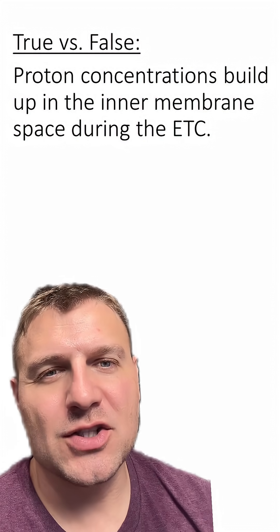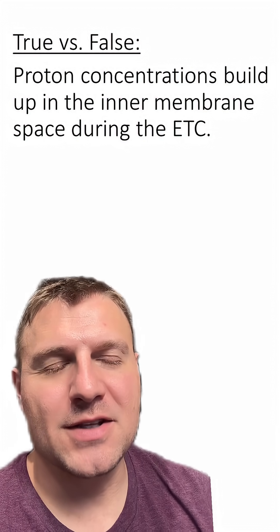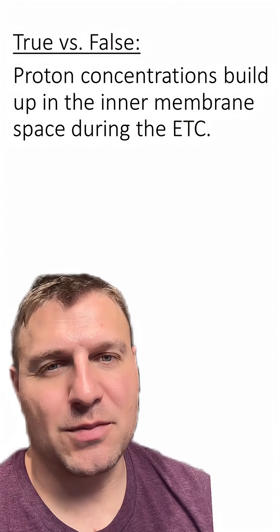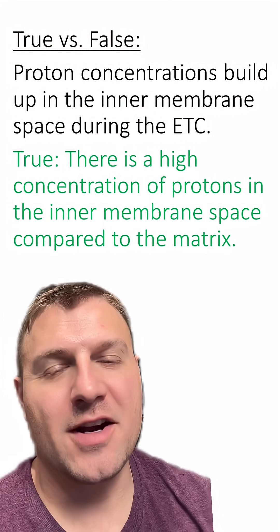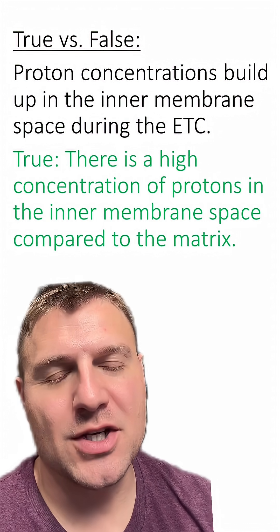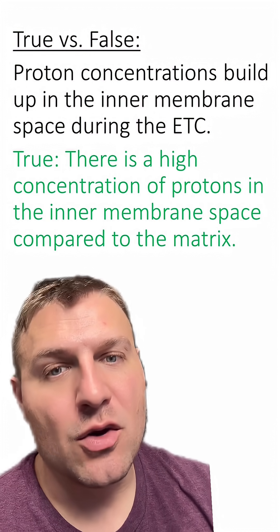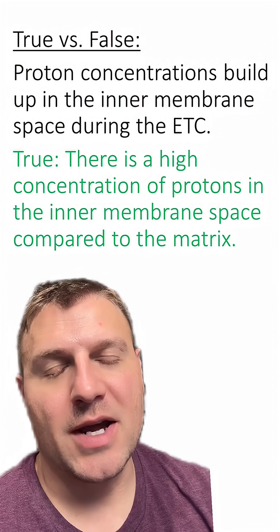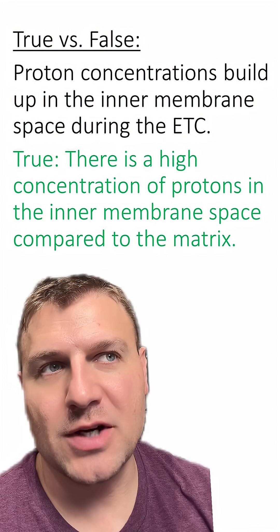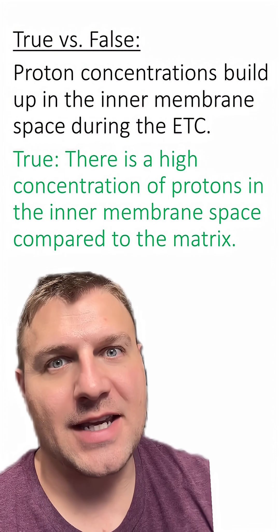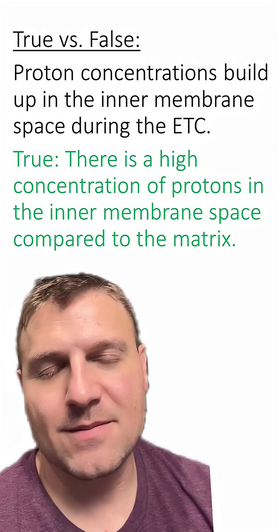Proton concentrations build up in the inner membrane space during the electron transport chain. Is this true or false? This is true. This is where there is a high concentration of protons. There is a low concentration in the mitochondrial matrix, and that concentration gradient helps make ATP through the enzyme ATP synthase.